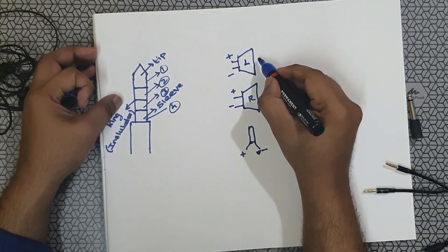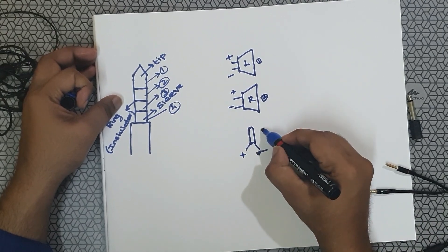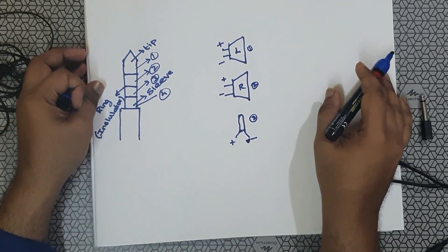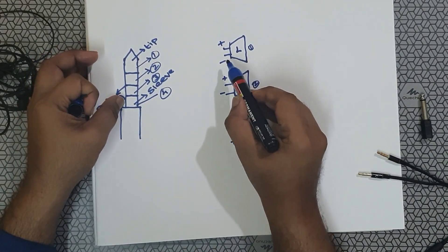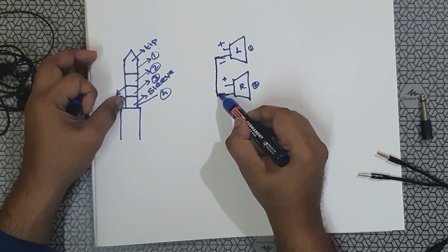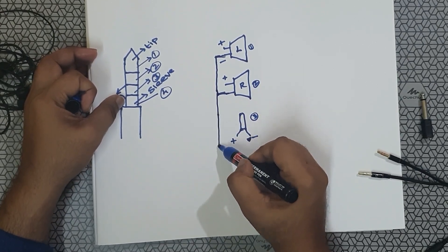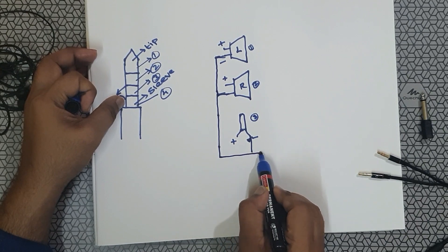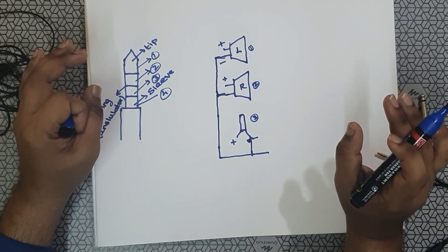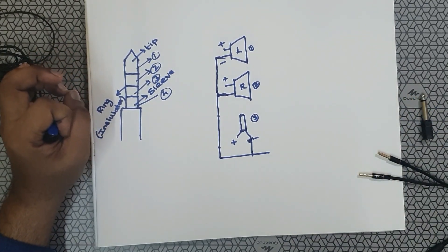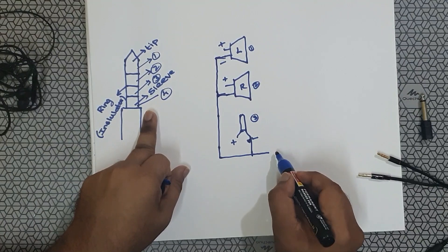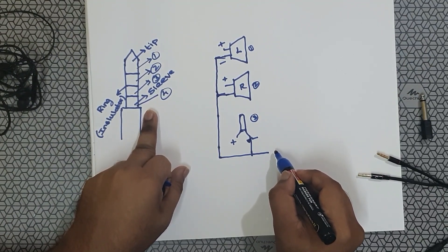So totally there are three devices: two speakers and one mic. In electronics, all the negative terminals are interconnected together and made into one single connection. That one combined negative connection is then connected to the sleeve of the pin.